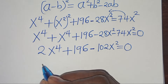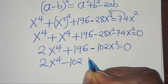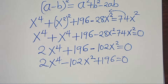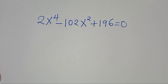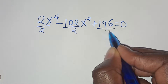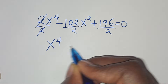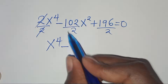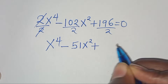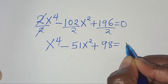We can rearrange this as 2x to the power of 4 minus 102x squared plus 196 equals 0. Now dividing everything by 2, we get x to the power of 4 minus 51x squared plus 98 equals 0.